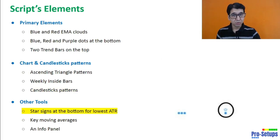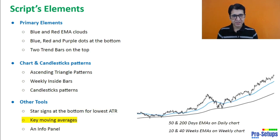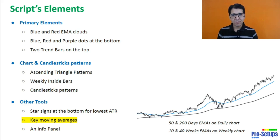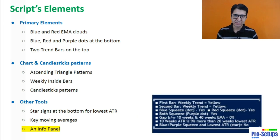In other tools we have the star sign which is nothing but the lowest ATR of a chosen period, key moving averages such as 50 and 200 day EMAs on daily chart and 10 and 40 week EMAs on weekly chart, and an info panel which tells us what is happening on the last, that is the current candle of the chart.